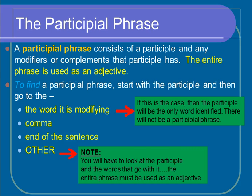To find the participial phrase, first start with the participle and then go to the word it's describing or modifying, the comma, the end of the sentence, or you might just have to listen to the answer of the question — and that answer is your entire phrase. I'll show you what I mean by that.